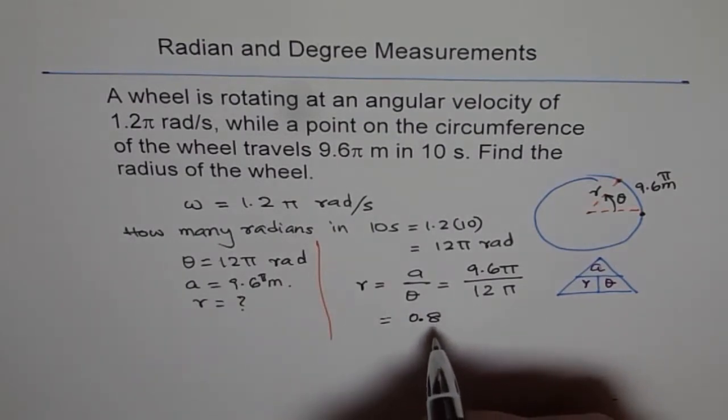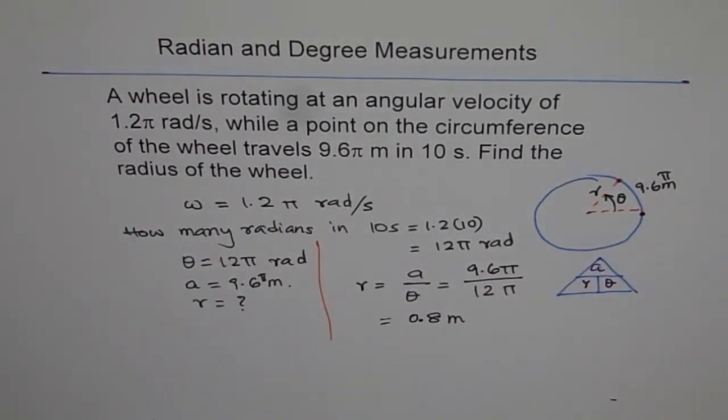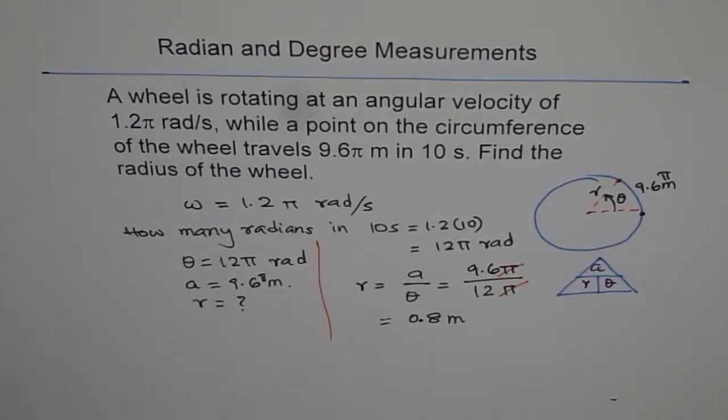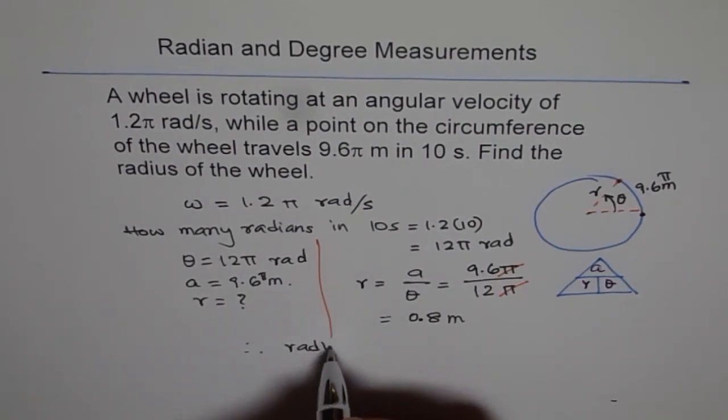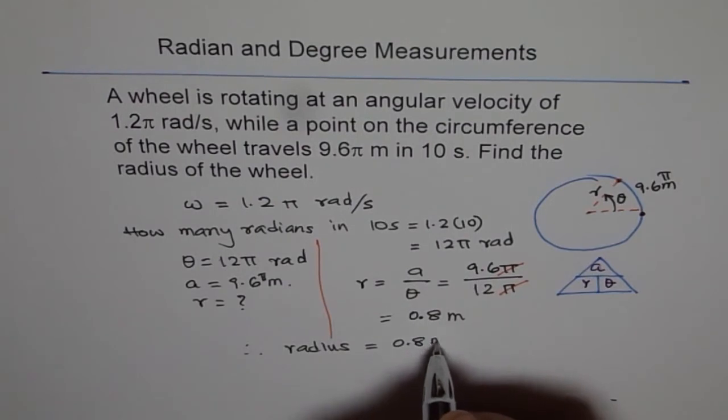Let me write 0.8 and the unit should be meters. So that is what we get. Since π and π cancels, 96 is 12 times 8, so we get 0.8 meters for the radius. So therefore, radius equals 0.8 meters.